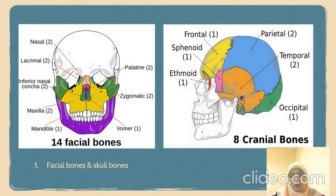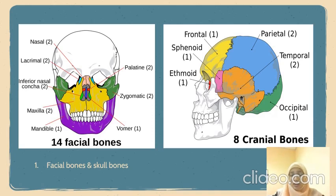For the cranial bones, we have eight cranial bones: the frontal, sphenoid, ethmoid, parietal, temporal, and occipital. There are eight cranial bones, each with a unique shape.